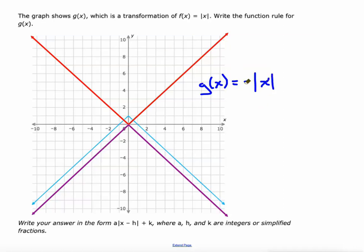I'm going to put a purple negative sign because that's the reflection and then I'm going to do the plus one in green. That's it, that's our function rule.